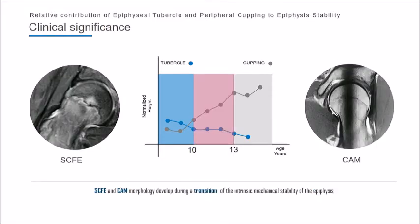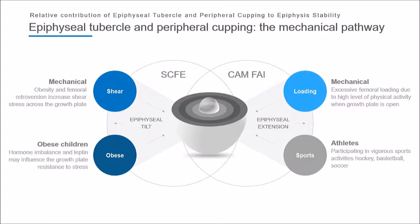Interestingly, most of the slips occur in this age group where you have this transition from the tubercle to the cup, and perhaps the slip occurs because the epiphyseal tubercle may be insufficient, or there may be too much mechanical load due to retroversion or obesity. To summarize: FAI perhaps may be a response to mechanical overload — a normal response by enlarging the cupping phenomenon — and SCFE may be the other end of the spectrum, occurring early on in adolescence and due to insufficient tubercle size or mechanical overload due to obesity.